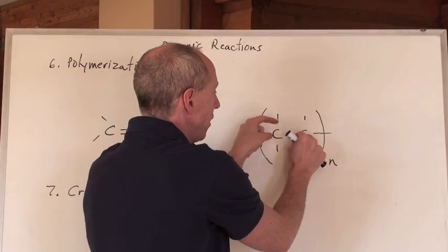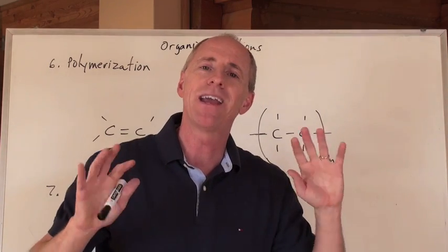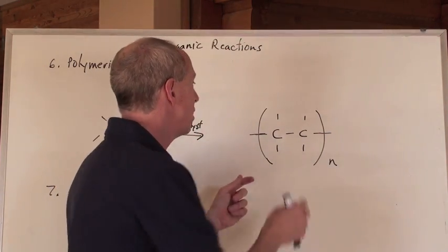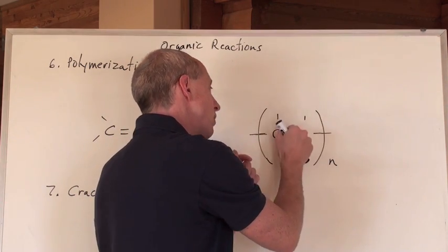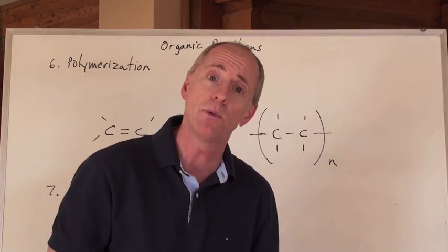These two put back in there as a double bond. That's how you can, by the way, you can identify any polymer, really, and you can tell what the original chemical was by just taking that chemical in the brackets, putting the multiple bond back in there, and then you can figure out what you actually had to begin with.